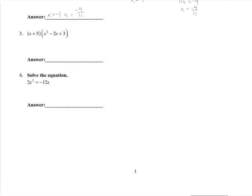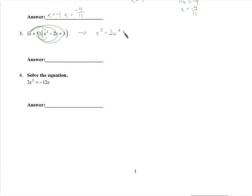Number 3, we want to find the product. We're going to multiply these together, so we're going to distribute the x. This is a shortcut — we know that if we were to distribute x plus 5 to each term, all we wind up doing is multiplying both x and 5 by everything in here. So as long as we pair up every possible pair and multiply them and collect like terms, we've got it. So we have x to the third, distributing the x — minus 2x squared, plus 3x.